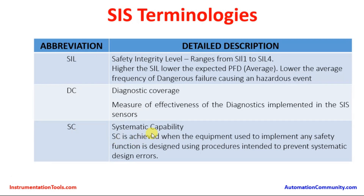SC stands for Systematic Capability. Systematic Capability is achieved when the equipment used to implement a safety function is designed using procedures intended to prevent systematic design errors, thereby avoiding systematic failures. It is a parameter used in SIS design that helps to prevent any design errors.